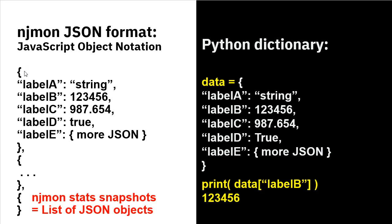njmon has one of these data records for each snapshot of data that it takes. They're separated by a comma and we get a whole series of them — it's called a list. In Python dictionary terms, we can declare data like this, which for a C programmer feels weird but is really fast and flexible. If you want to pick out a particular data structure, you just name it, pass it the label you want, and it goes and finds it.